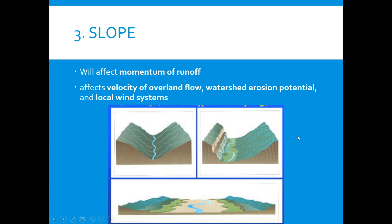Slope also affects the watershed because it affects the momentum of the runoff — that's like the velocity of the water as it moves down. For instance, the water is going to move from the higher elevation down into the stream in the valley. If the slopes are very steep, that water is going to run down faster, which causes more erosion, whereas a less steep slope causes slower erosion.